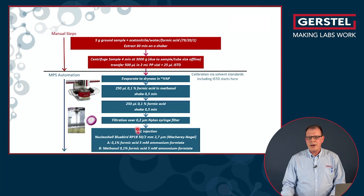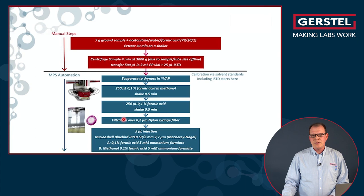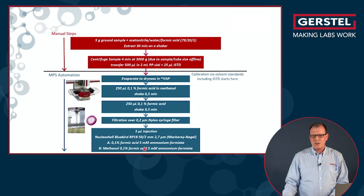First of all we take the sample to dryness. Then we reconstitute each time in 250 µL of different solvents. Then we see a little precipitation, so we need to automatically filter the extract, and then finally go to the LC-MS to determine the mycotoxins.